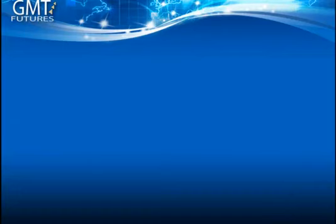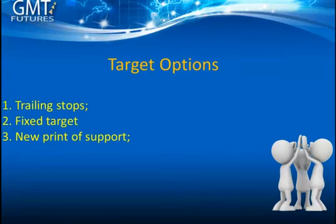Now speaking of taking profit, I'm going to walk you through the target options. You've got your trailing stop — if the market's moving really well and you want to trail your strategy, you can do that with trailing stops, which we'll cover in more detail as we go through the video. The other option is a fixed target on your automation or strategy, so you can have a fixed profit point, or you can wait for a new print of support. Remember we're trading the sell setup and looking to pyramid short, so once you have a support level print set up, you can take profit at that level as well.